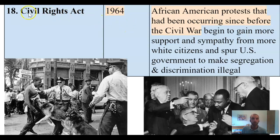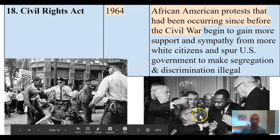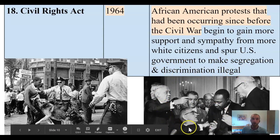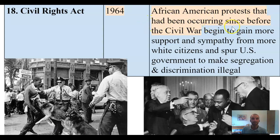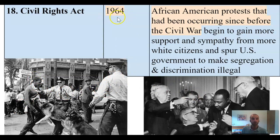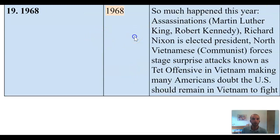During that time, all this stuff happens, including the Civil Rights Act in 1964. A mistake would be to focus the Civil Rights Act on President Lyndon Baines Johnson. He did work to pass this law that made segregation and discrimination illegal, but that would be wrong to focus on him, although he played an important role. The only reason it happened is that African-American protests that had been occurring since before the Civil War — since there had been slavery, there had been protests against discrimination and segregation — began to gain more support in the 1960s, sometimes through controversial protests.